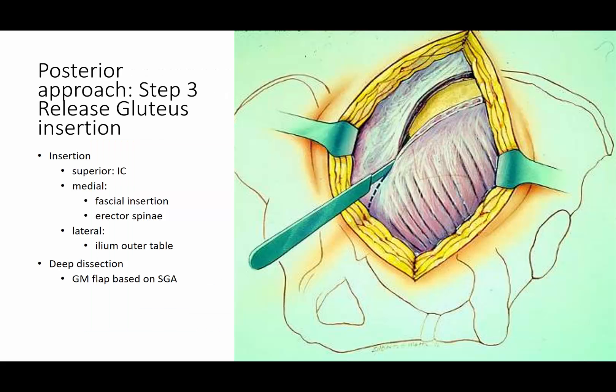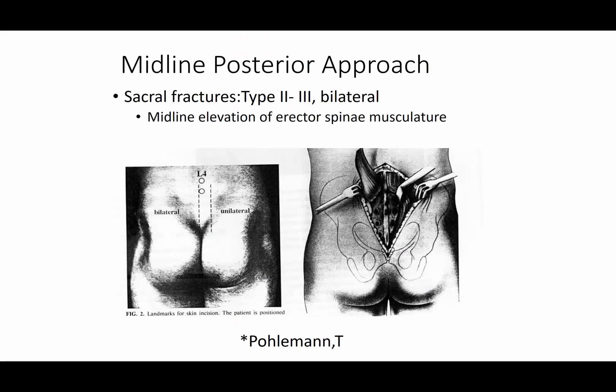Before you elevate the gluteus maximus, the next step is to elevate the gluteus insertion from the iliac crest and all the way down toward the fascial insertion and off the erector spinae muscle. The gluteus maximus has this broad origin, and you elevate it off the outer table of the ilium. Then deeper you'll dissect the gluteus medius as you continue along the iliac crest outer table.